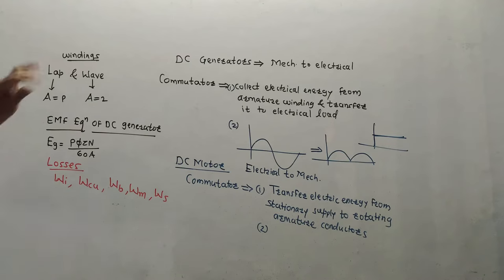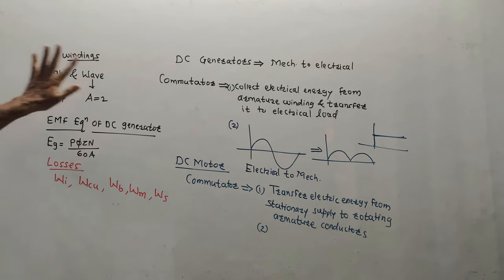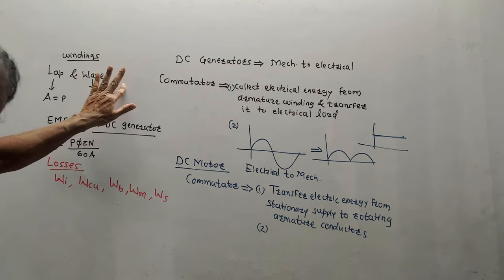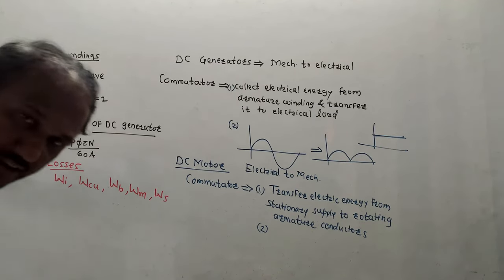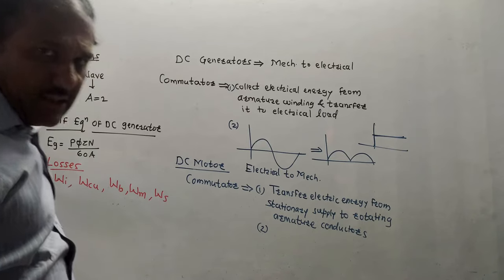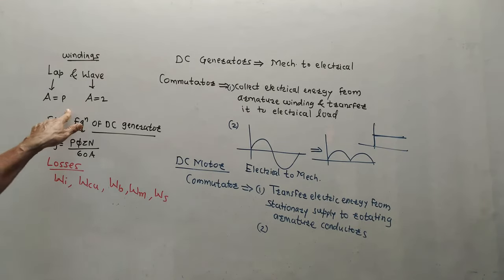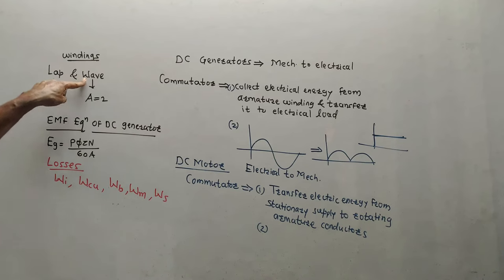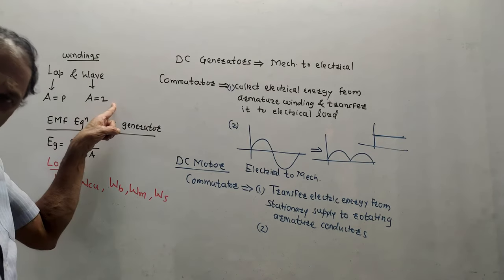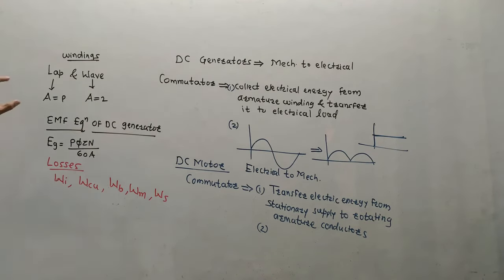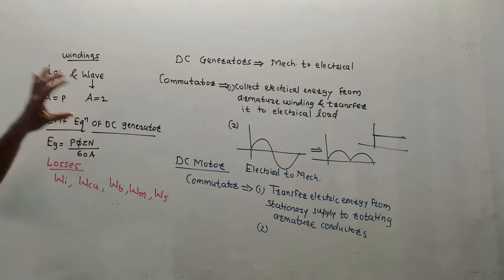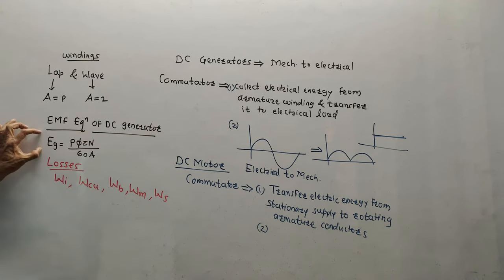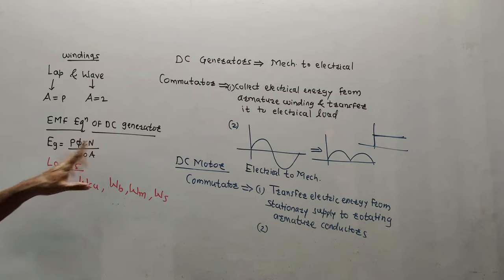There are two types of windings: lap winding and wave winding. For lap winding, the number of parallel conductors A equals P, where P represents the number of poles. For wave winding, A equals 2 — a fixed number. You should also prepare the EMF equation of the DC generator. The final formula is: E = PΦZn / 60A.